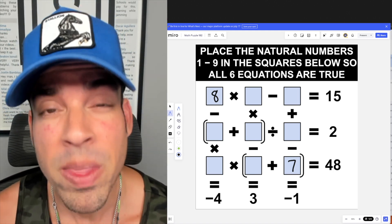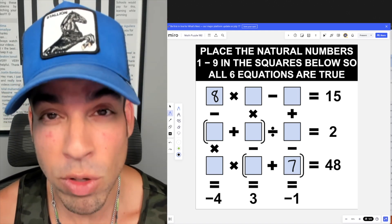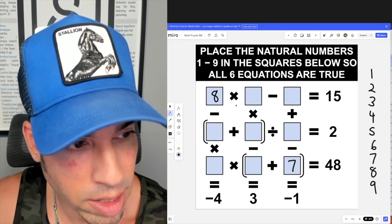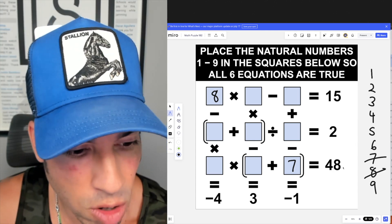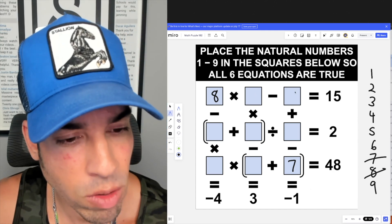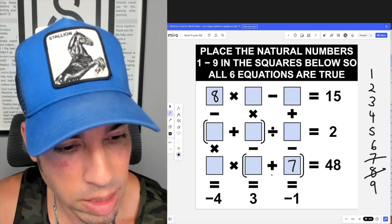Hit that pause button and see if you can figure it out. When you're ready, hit play and I'll give you the explanation. Right off the bat, we've got numbers one through nine. Every number is going to be used only once, so we can say eight and seven are out.